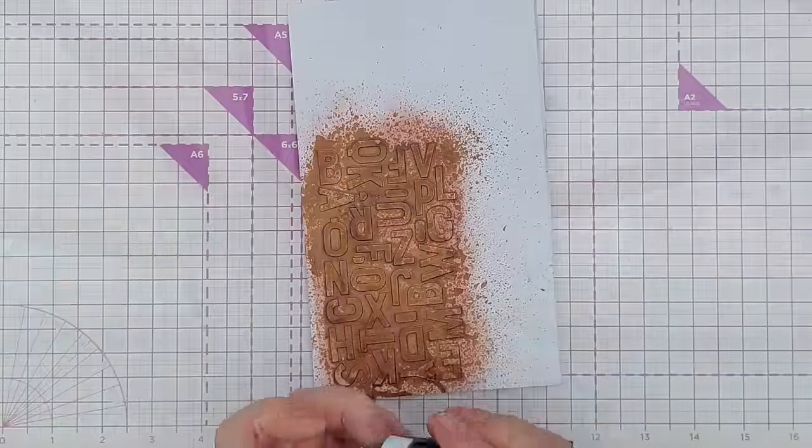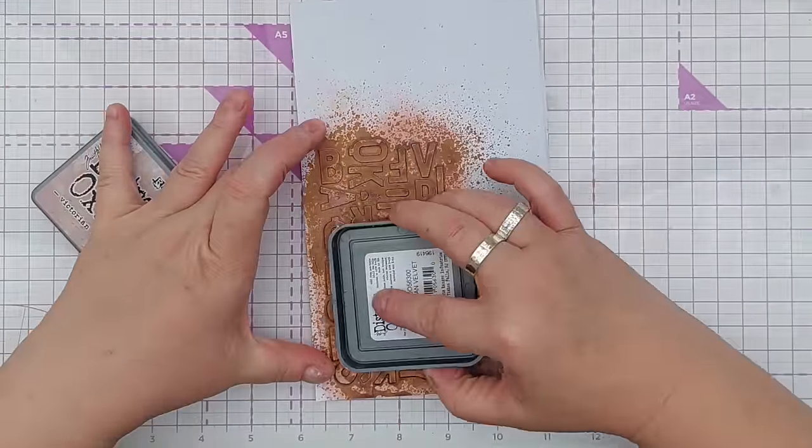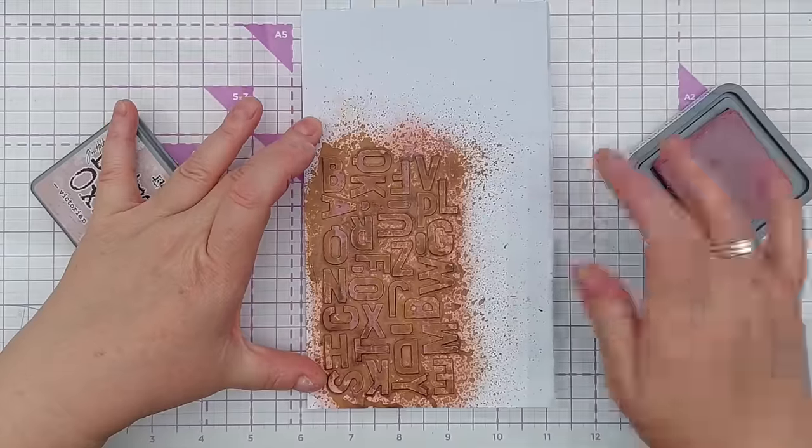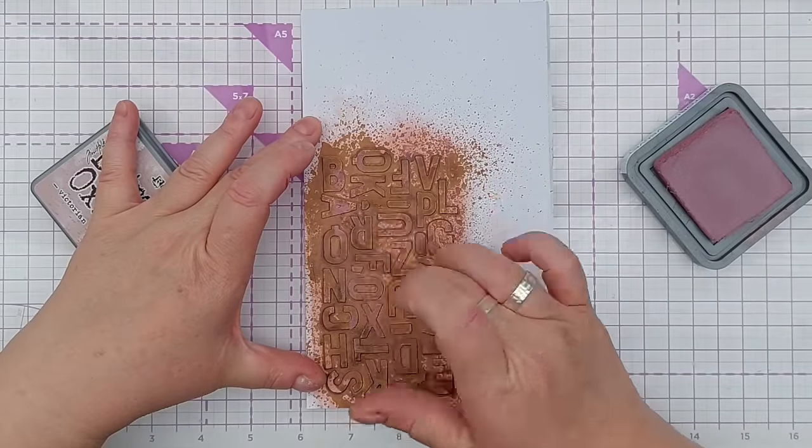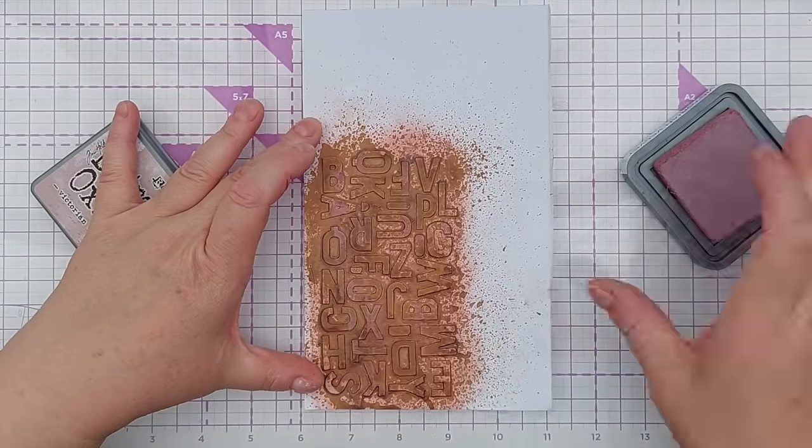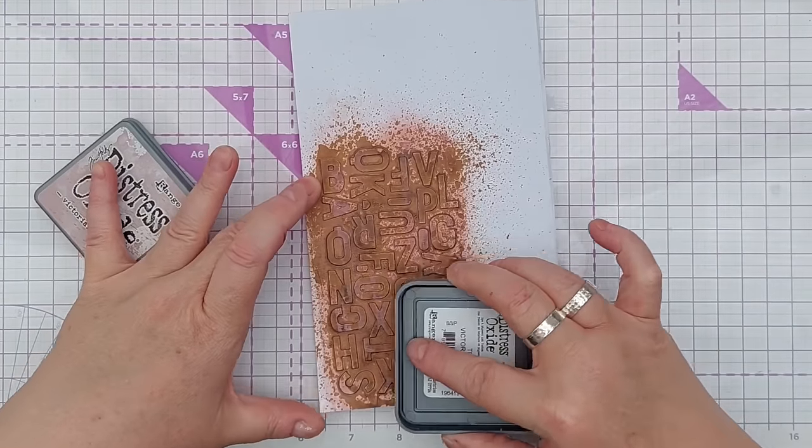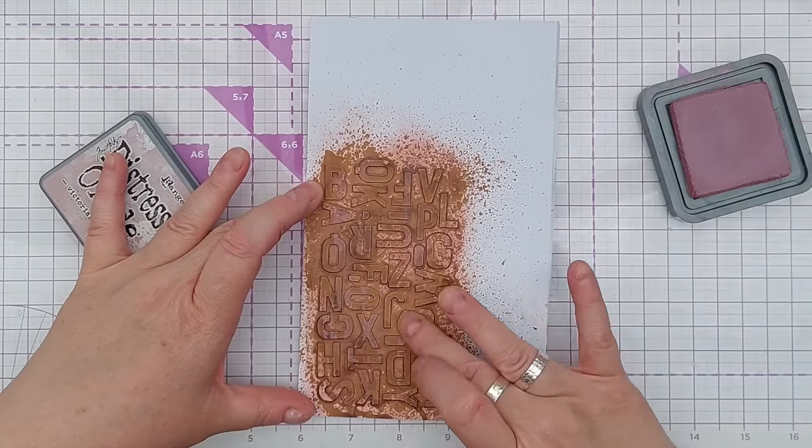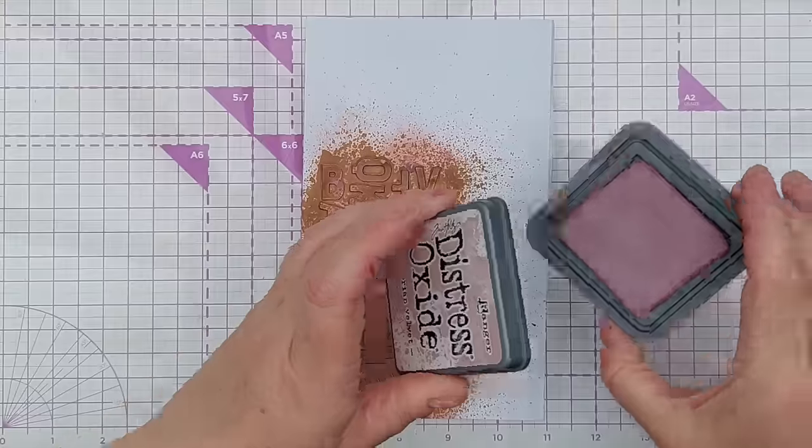Now again I'm just going to come back in with a bit of Victorian Velvet, add that on top, smush it down a bit with my finger to get rid of the streaky bits. This brings a bit of lightness back to some of the letters.